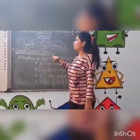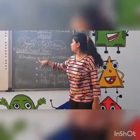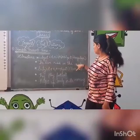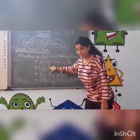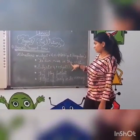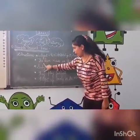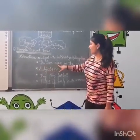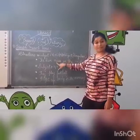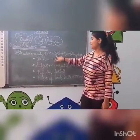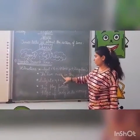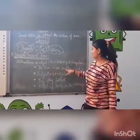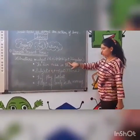Let us learn this with the help of some examples. The sun rises in the east. Here 'the sun' is the subject. 'Rises' is the verb — first form is rise. We use 's' and 'es' with singular subjects. 'In the east' is the object here.